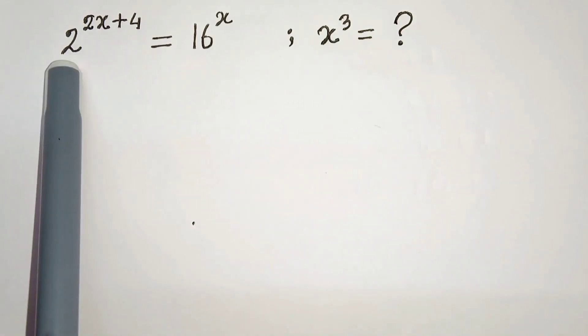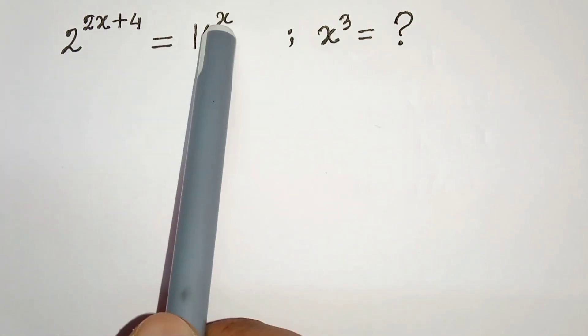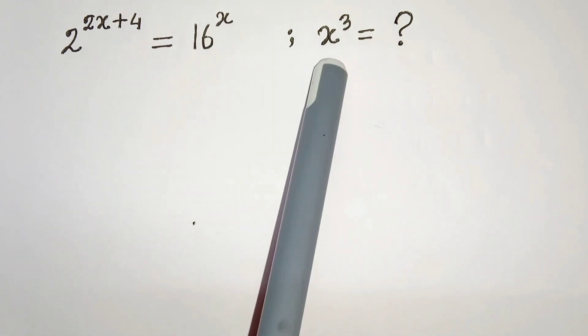Hello everyone, in this video we have 2 to the power 2x plus 4 equals to 16 power x. We have to find x cubed equals to what? So let's start.